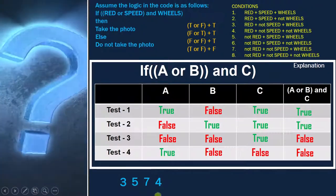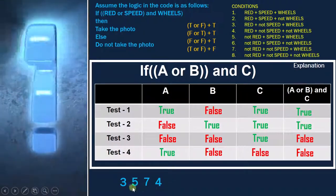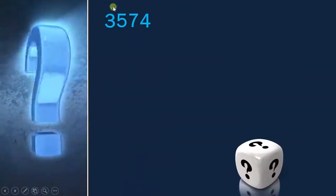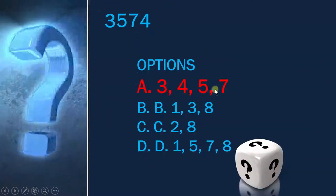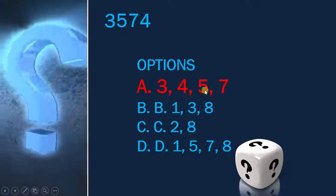So now I have to see in the option which of the combinations contains 3, 5, 7, and 4. So as I told, 3, 5, 7, and 4, and these are our options. So in this option, option A is our correct answer.